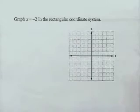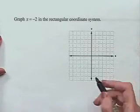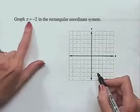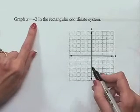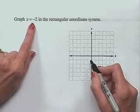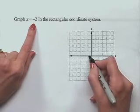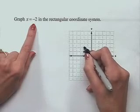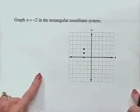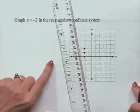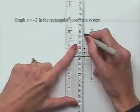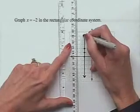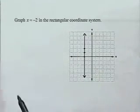Now let's graph x equals -2 in the rectangular coordinate system. Every point on this line has an x-coordinate of -2 — any point 2 units to the left of the origin lies on it. All such points lie along the same vertical line. We recognize that vertical lines have equations of the form x equals a constant value.